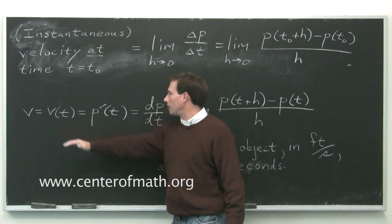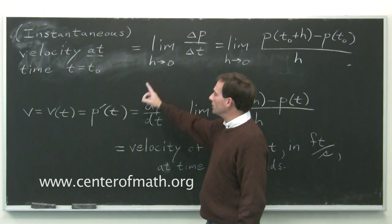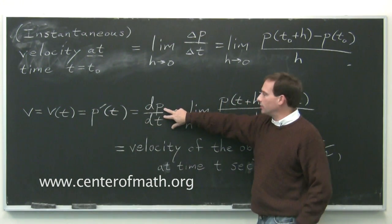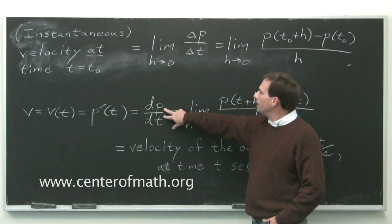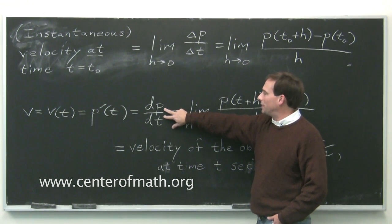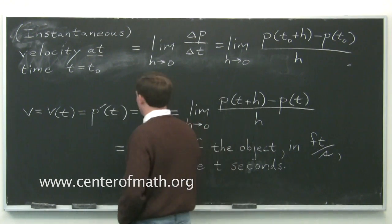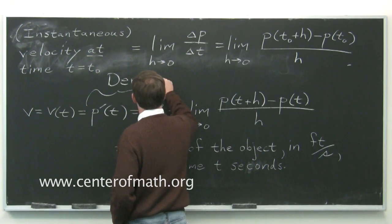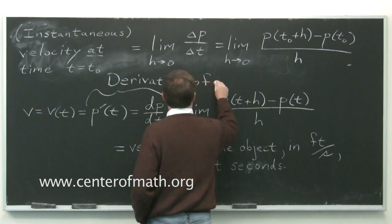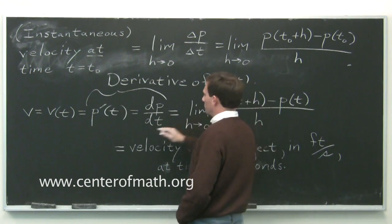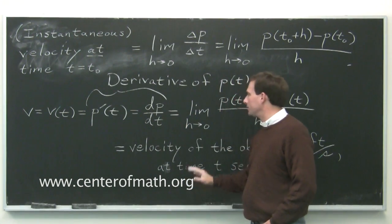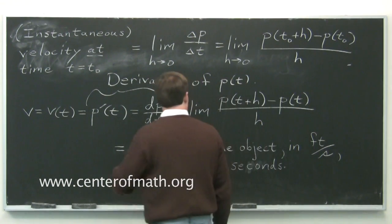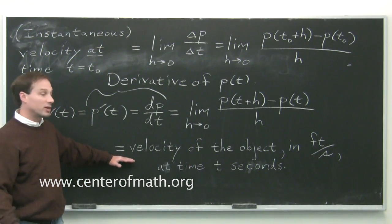You might call this v(t) for velocity. The notation for this instantaneous rate of change is this prime. It's also written in this notation, which makes it look like a fraction. And this is read dp/dt. You don't say dp over dt, it's just dp dt. This is called the derivative. This, the mathematical term for this, is the derivative of p(t). You read this p′(t), it's the same as dp/dt, the different notations are useful at different times. And it means this limit, where I've now dropped the subscripts of zero. It's the velocity of the object at time t seconds, you get a new function of time.